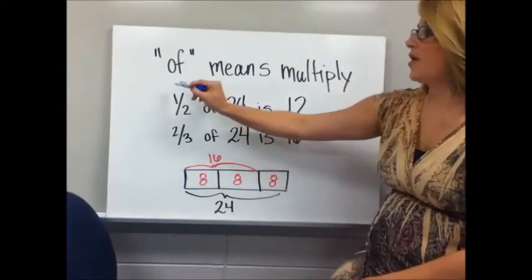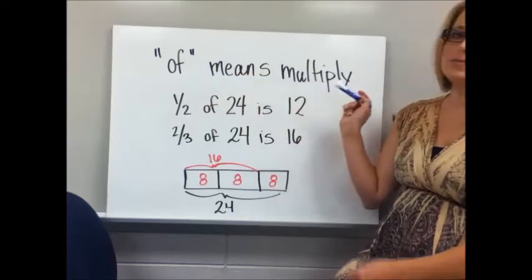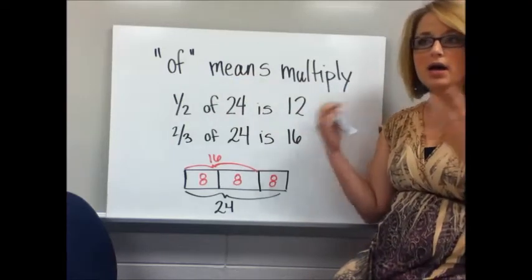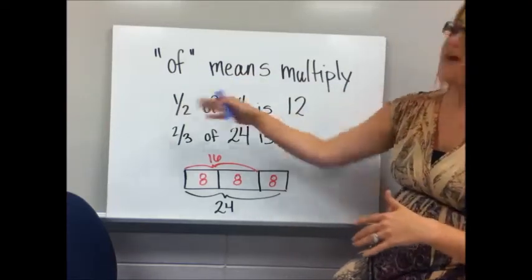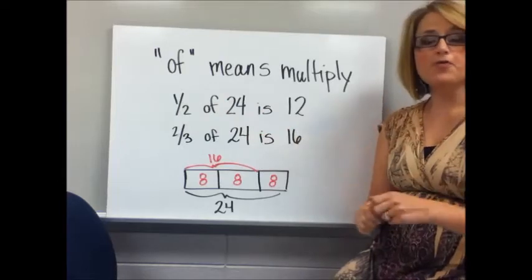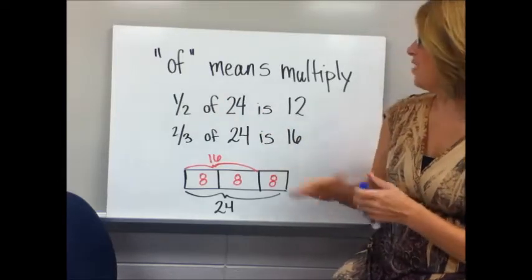You should already know that when you hear the phrase 'of' it means to multiply. So we're going to use what we know about 'of' and finding maybe half of something to prove the rule for multiplying with fractions.